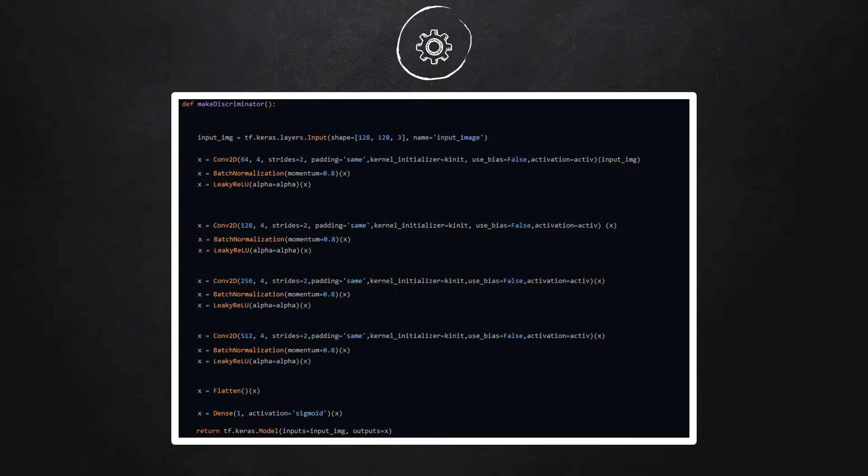The code block for discriminator function looks like this. First, we construct an input layer of same size as that of an image. Then we enter two convolution layers. Each convolution layer is followed by a batch normalization layer and a leaky ReLU activation function. After the convolution block, we flatten the output and then add a dense layer with sigmoid activation function. This is the output layer which gives the probability of whether an input image is real or a fake image.